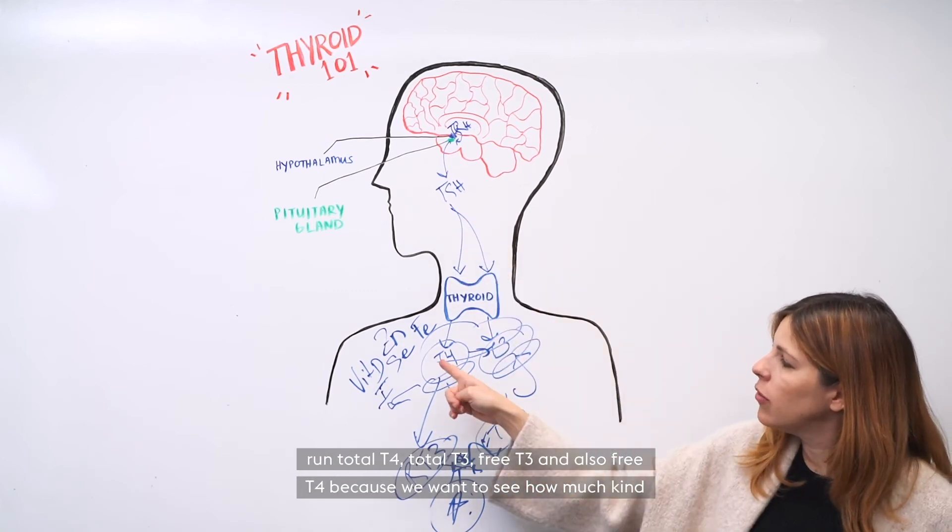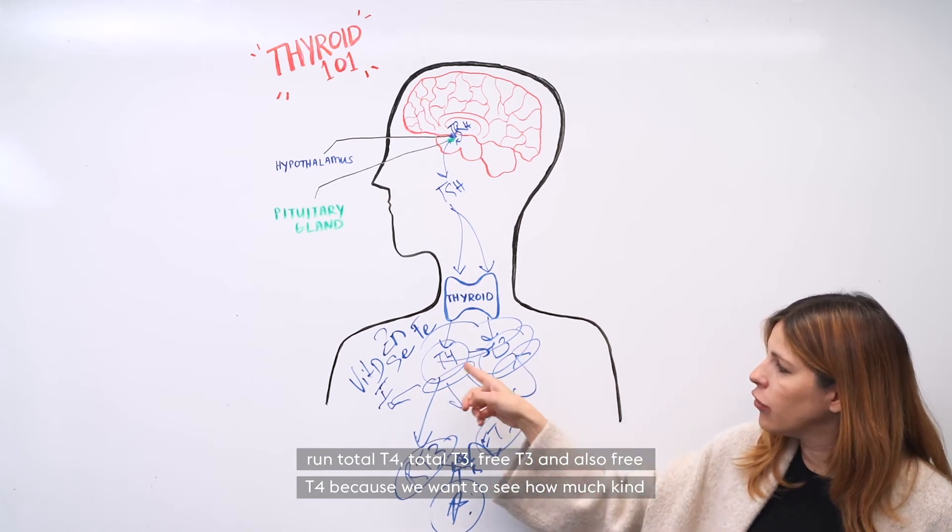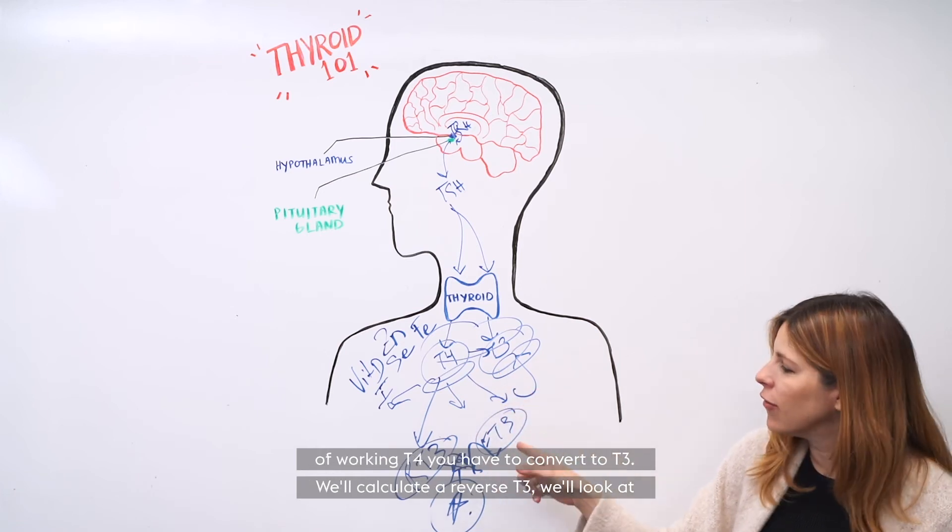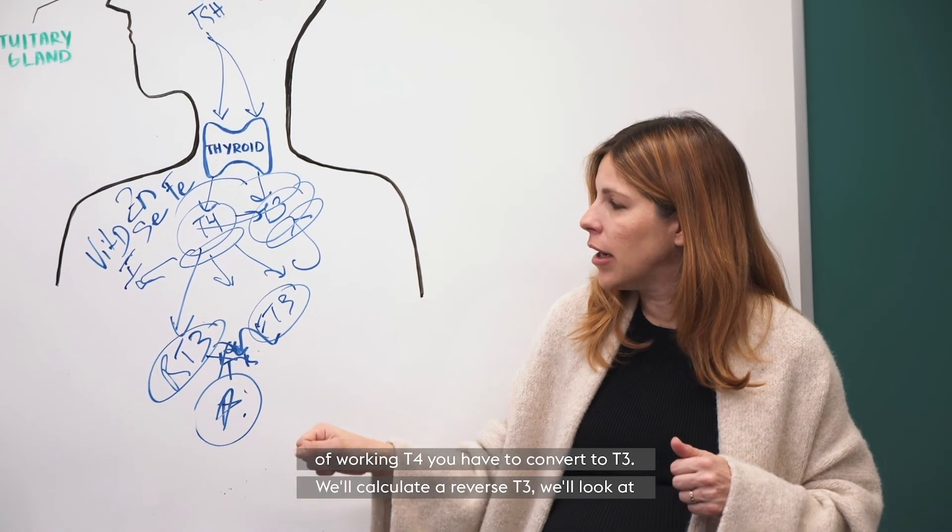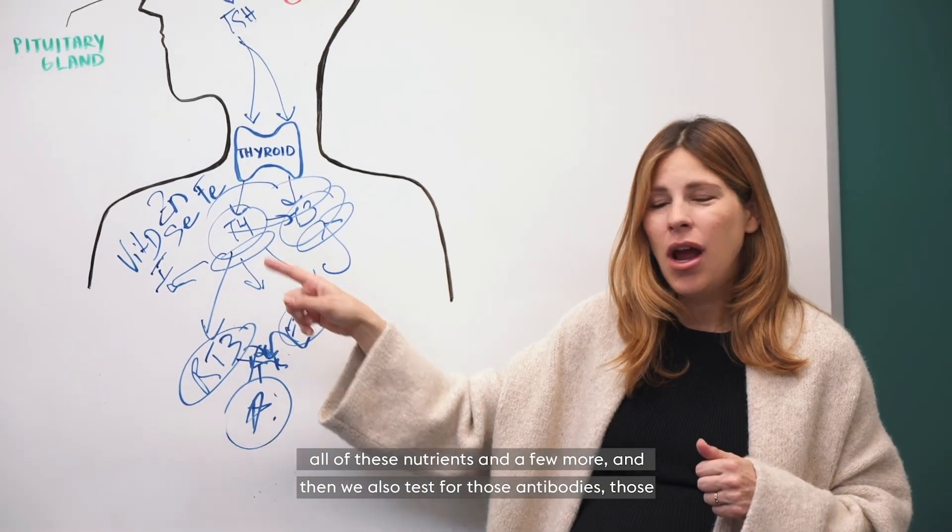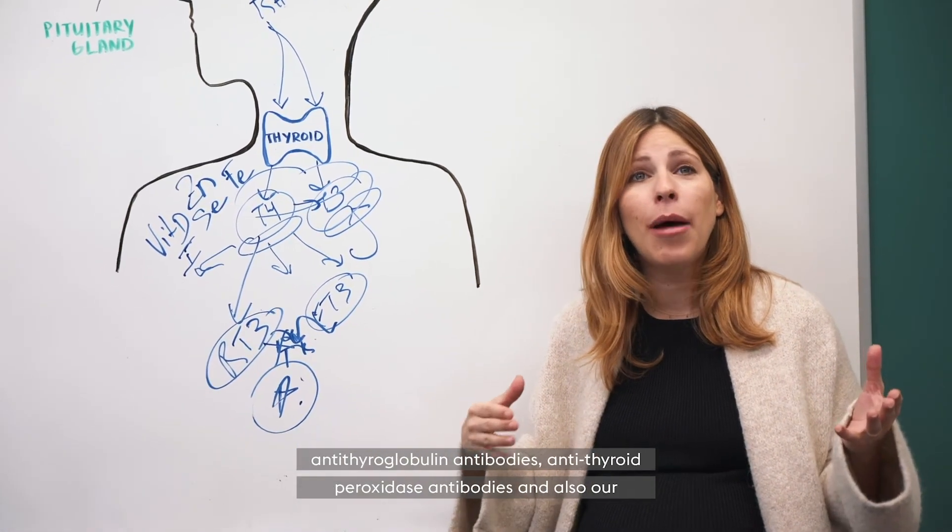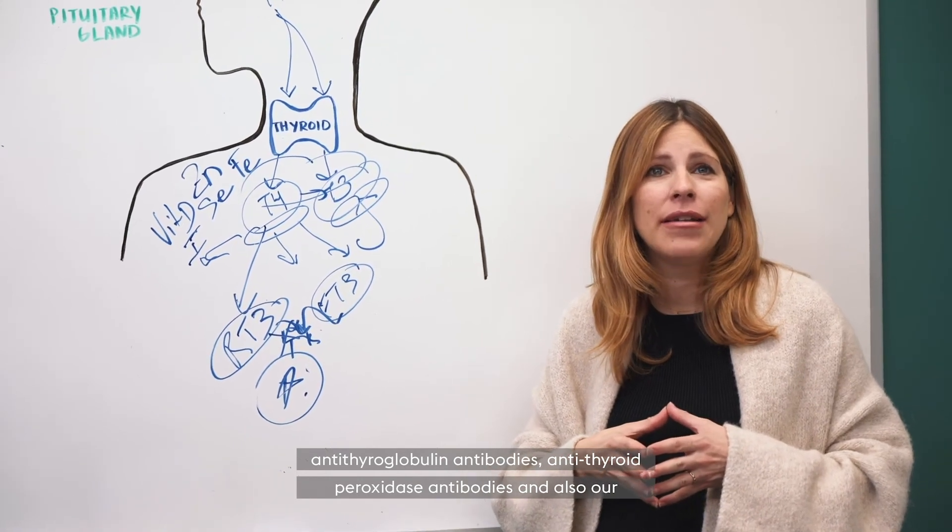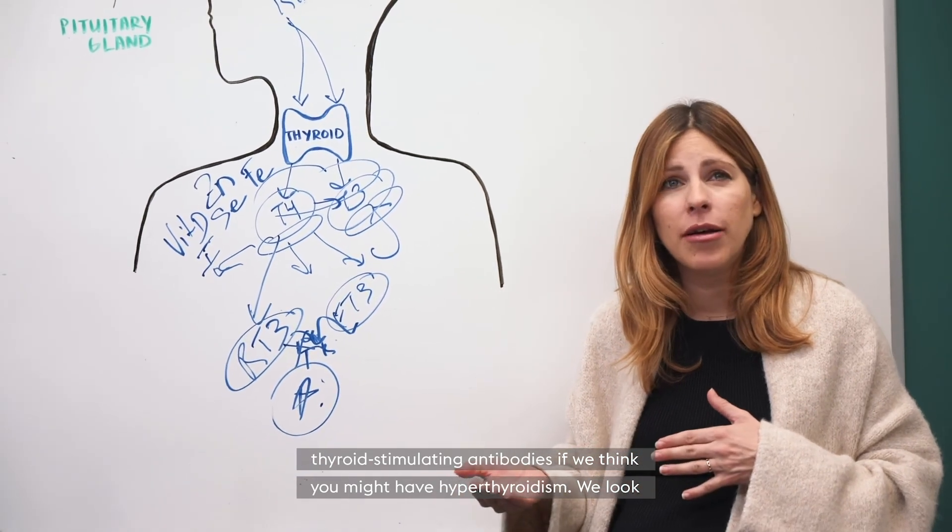So we run total T4, total T3, free T3 and also free T4 because we want to see how much working T4 you have to convert to T3. We'll calculate reverse T3, we'll look at all of these nutrients and a few more, and then we also test for those antibodies, those antithyroglobulin antibodies, antithyroid peroxidase antibodies, and also our thyroid stimulating antibodies if we think you might have hyperthyroidism.